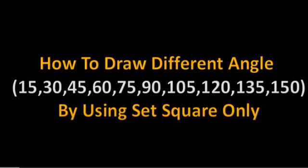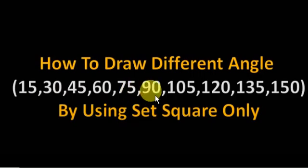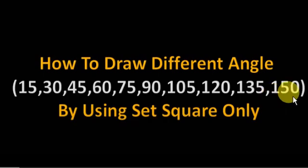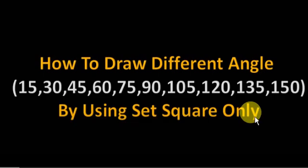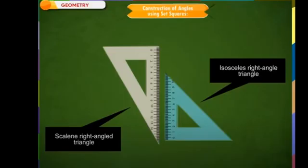Hi everyone, once again welcome back to Fitra's online learning program. My name is Mohammed Arafat. Today I'm going to explain how to draw different angles — for example, 15, 30, 45, 60, 75, 90, 105, 120, 135, and 150 degrees — by using set squares only. Before starting the construction of angles, let us see what a set square is.